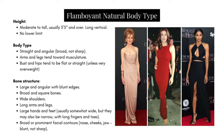What you should hold on to is the presence of both blunt elongation — so women who aren't extremely sharp — and width. Now let's discuss the Flamboyant Natural body type. Height is moderate to tall, usually five foot five and over, with a long vertical line and no lower limit. The body type is straight and angular, with a bone structure that is broad and not sharp, which differentiates them from the Dramatic.